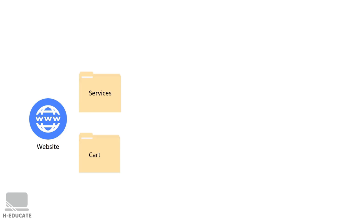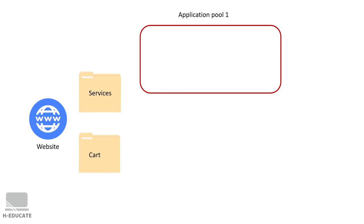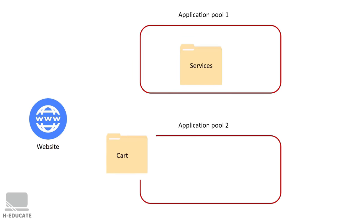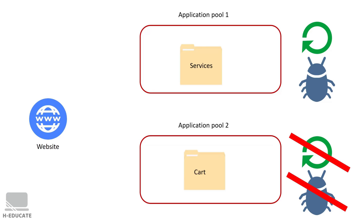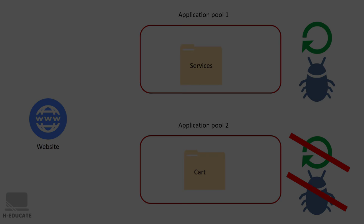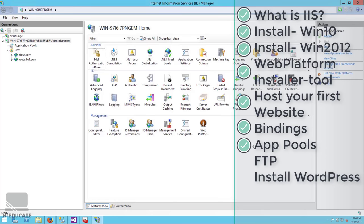Another key point: you can divide a single website into multiple application pools. For example, if your website has a Services folder and a Cart folder, you can assign each to a different application pool. This way, if one part has bugs or is being tested and causes the pool to restart, the other part of your website remains unaffected — very important when testing new features.